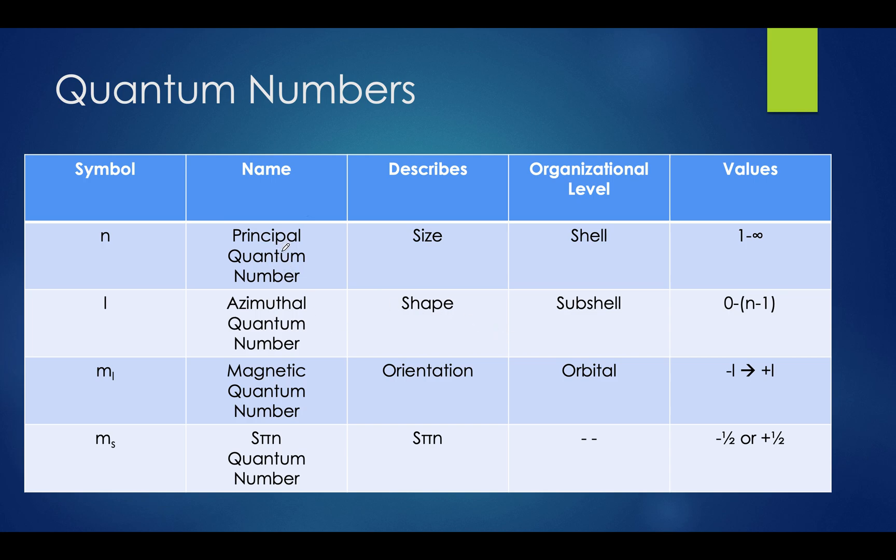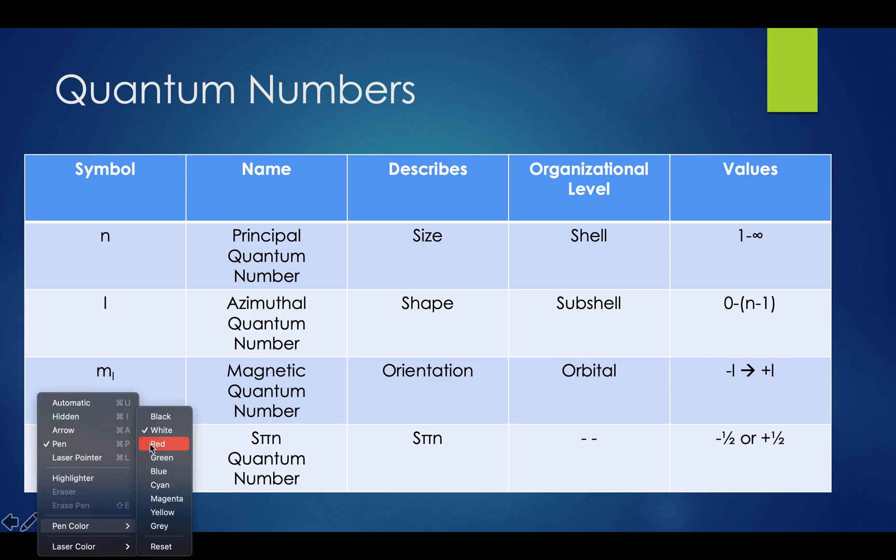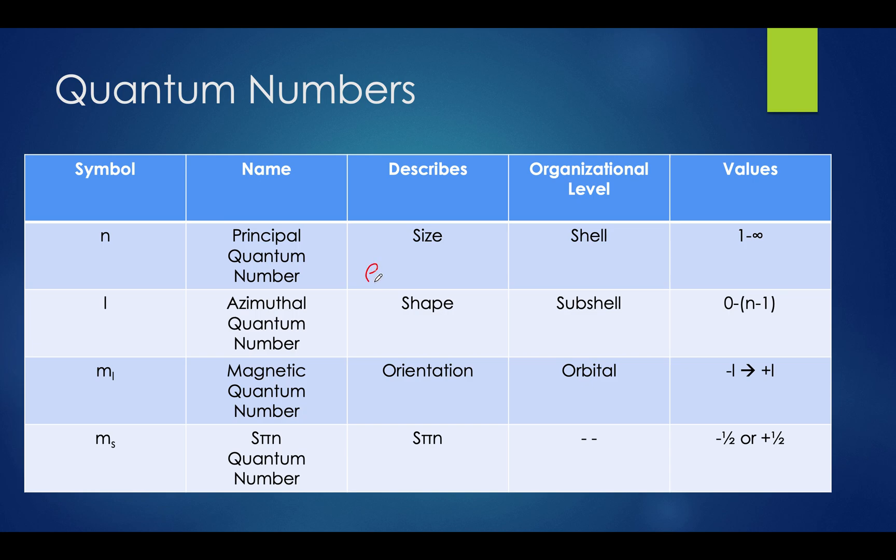It's commonly referred to by its symbol n, and it's used to describe size, or more specifically, its energy level. The lower the energy level, the closer the shell is to the nucleus.